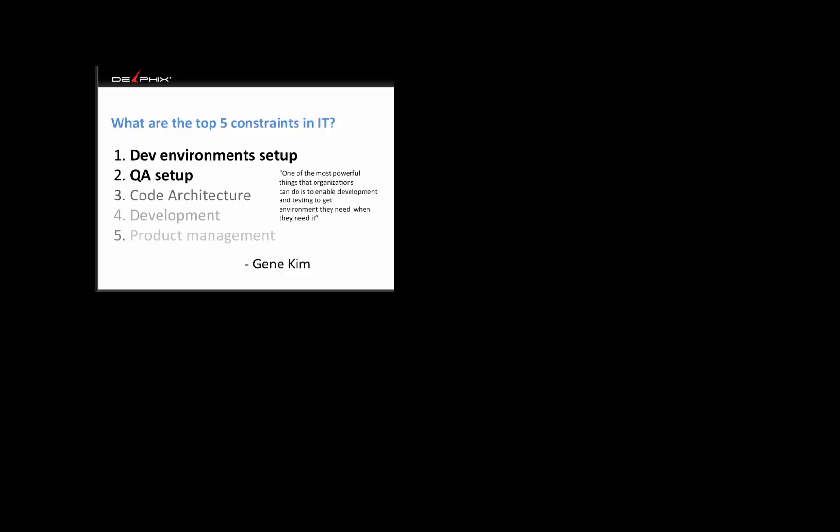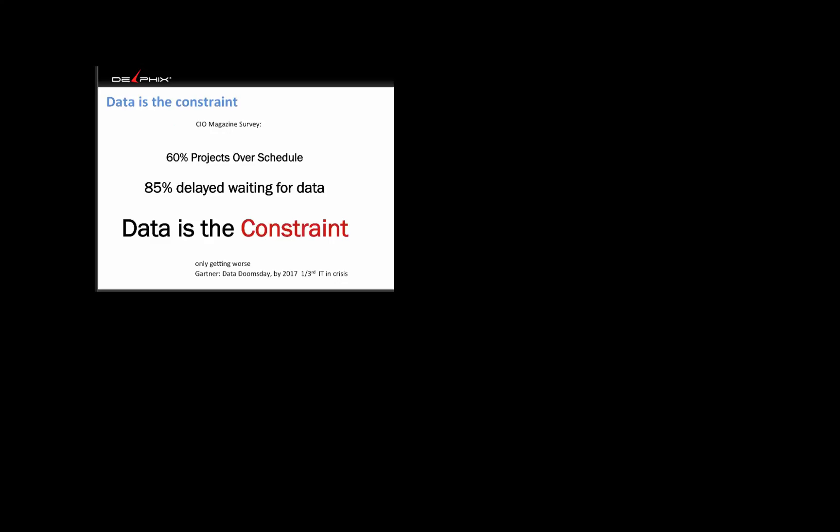Gene Kim says one of the most powerful things organizations can do is enable development and testing to get the environments they need when they need them. A recent CIO Magazine survey found that over 6% of projects are over budget and over schedule — and of those, 85% were delayed because they were waiting for data and environments. Gartner predicted data doomsday by 2017, expecting one third of IT departments to go through a crisis where they can't handle their workload.